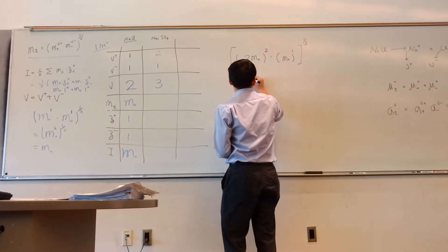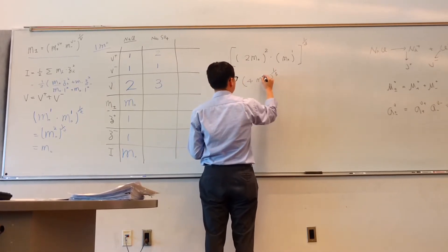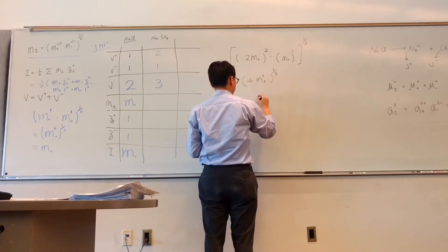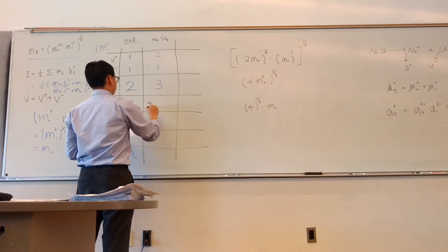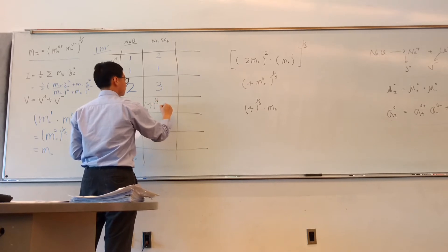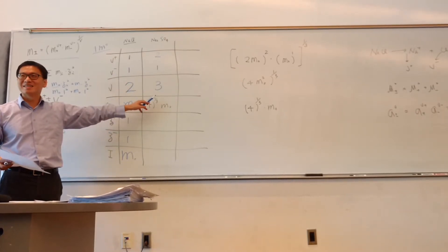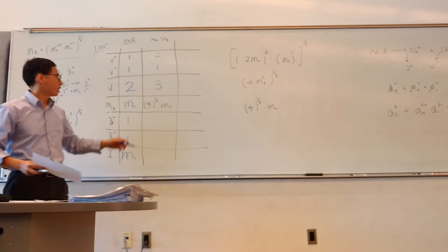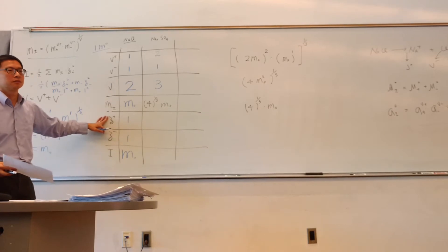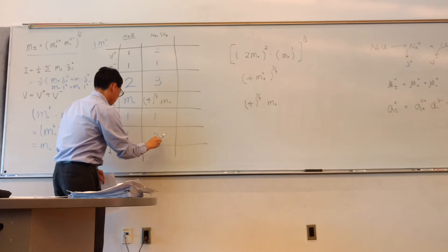So you're going to have 4M₀³ and then take the cubic root, which gives you M± for this case. For A₂SO₄, your Z+ is 1 and your Z− is 2.